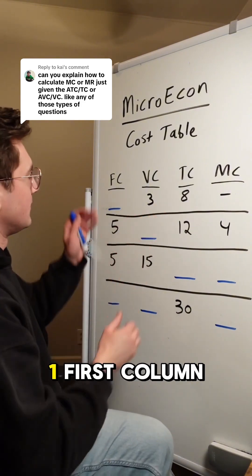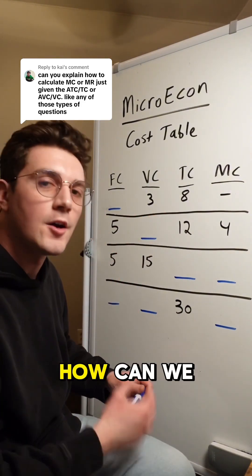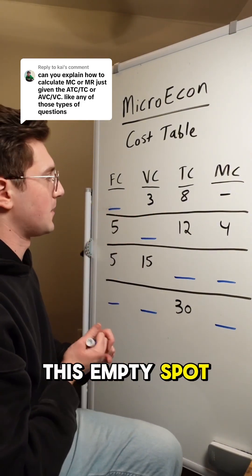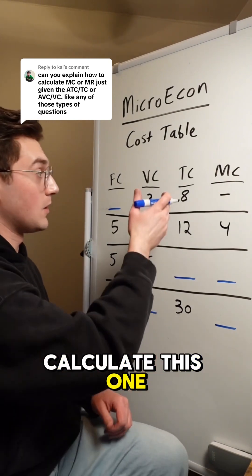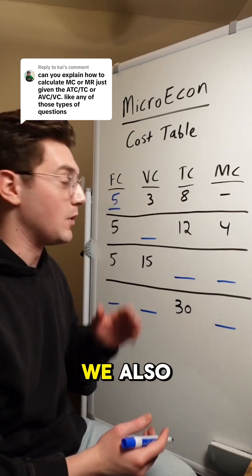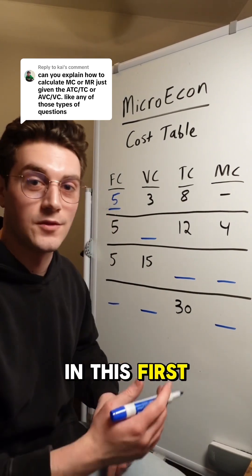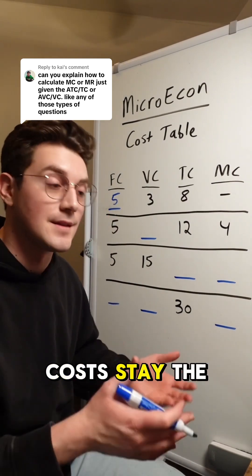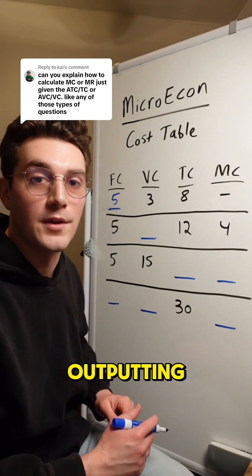All right, so let's start here with row one, first column, fixed cost. How can we know what to put here in this empty spot? Well, there's two ways we can calculate this. One, total cost is eight and variable cost is three, so eight minus three is five. We also could have just looked at the rest of the values in this first column here, because remember, fixed costs stay the same no matter how many units we're outputting.